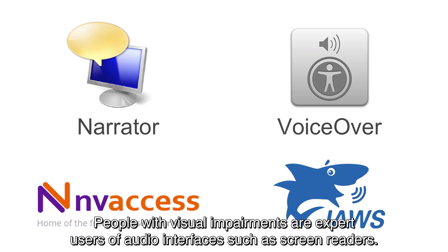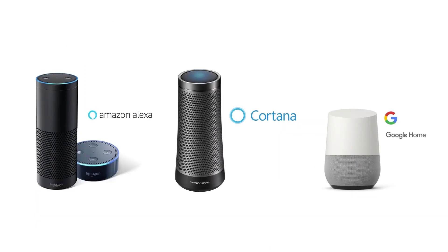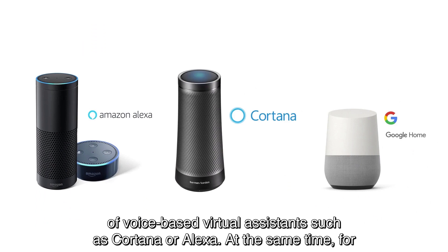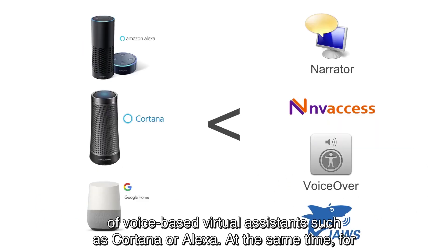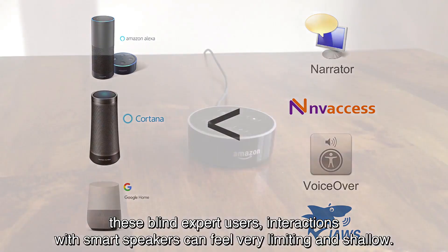People with visual impairments are expert users of audio interfaces such as screen readers. Increasingly, members of this community are also making extensive use of voice-based virtual assistants such as Cortana or Alexa. At the same time, for these blind expert users, interactions with smart speakers can feel very limiting and shallow.